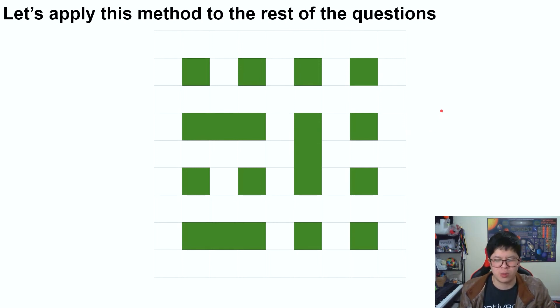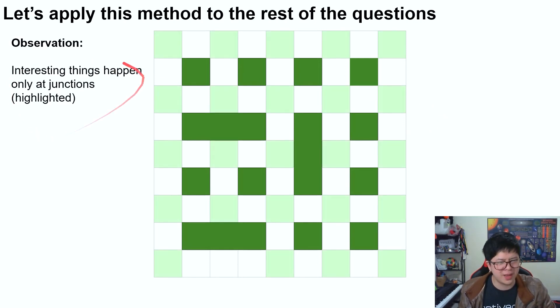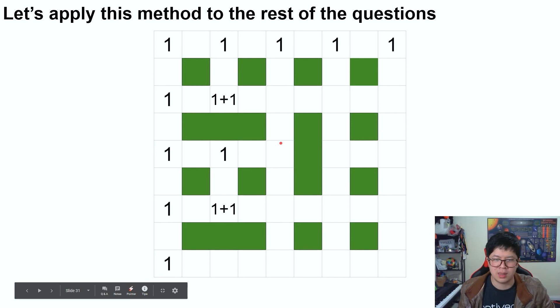So let's apply this method to the rest of the questions. A little observation, interesting things only happen at the junctions, because if you're like over here, you're pretty much copying the answer over and over. So I'm going to animate the rest of this for you.